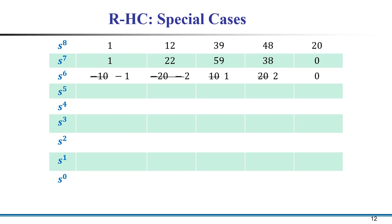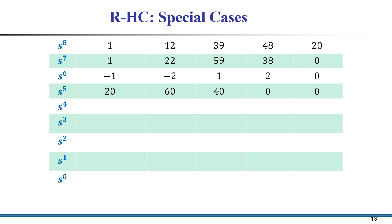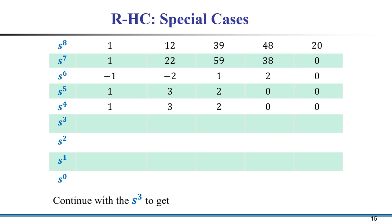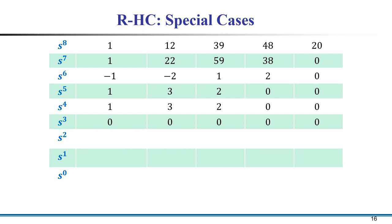After dividing by 10, we obtain the simplified row. Then calculating the s⁵ row and dividing by 20 gives us the next simplified row. We observe that the s⁵ row and s⁴ row are the same, so when we calculate the s³ row, all elements will become zero — the complete row is zero.